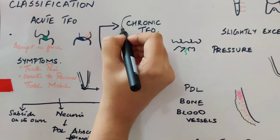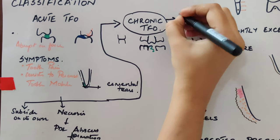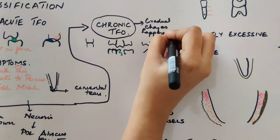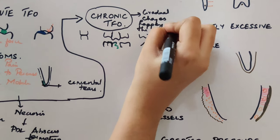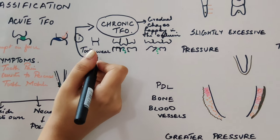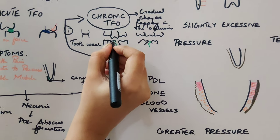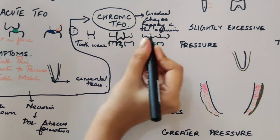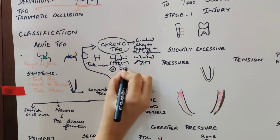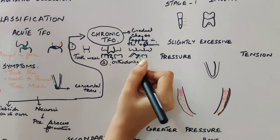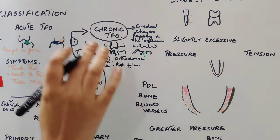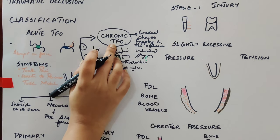Chronic TFO occurs when there are gradual changes in the occlusion. Causes include tooth wear from parafunctional habits like bruxism, an unreplaced missing tooth leading to supra-eruption or drifting, orthodontic tooth movement to a functionally unacceptable position, or the presence of a high filling that alters occlusal forces. All these can lead to chronic TFO.